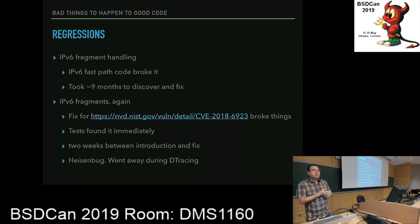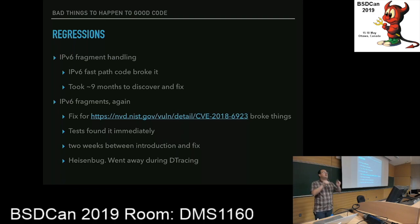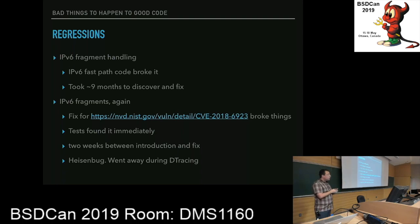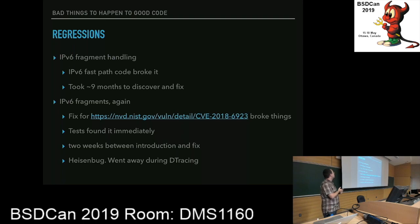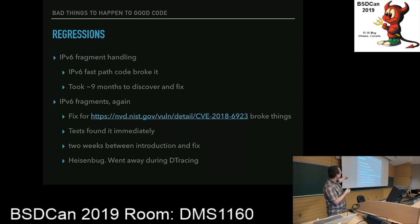Oops. Nobody cares about IPv6, right? The tests noticed this immediately — only it was a PF test, so everybody went 'it's Kristoff's fault, we don't need to look at this.' I looked at it, managed to find a fix, and it only took two weeks. Two weeks is longer than we'd like it to be broken, but given the choice between being broken for two weeks and being broken for nine months, it's a fairly obvious choice.